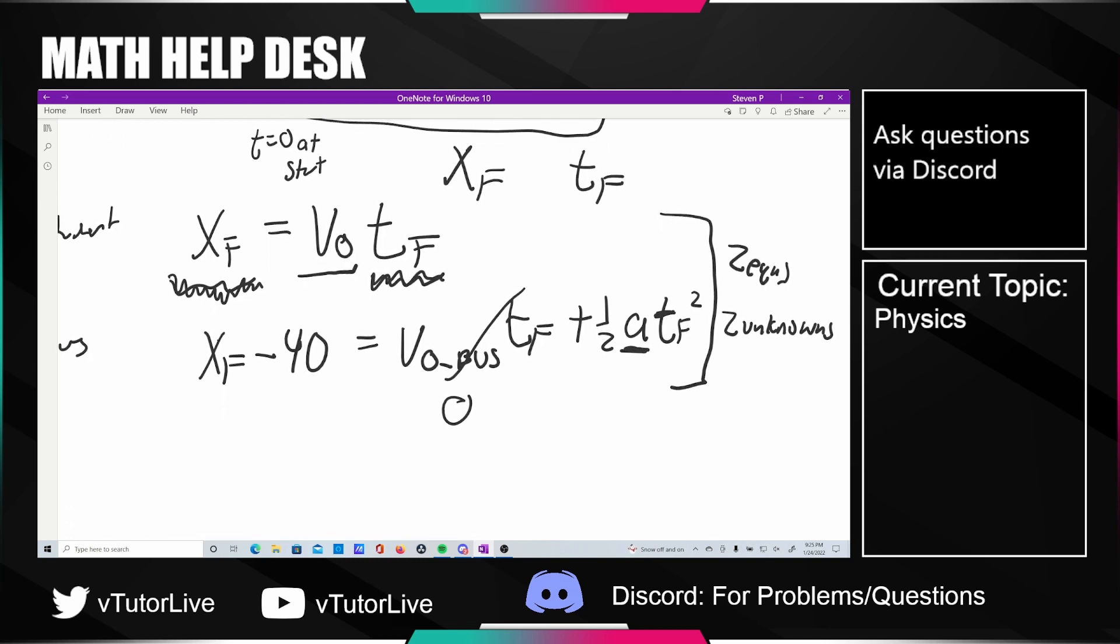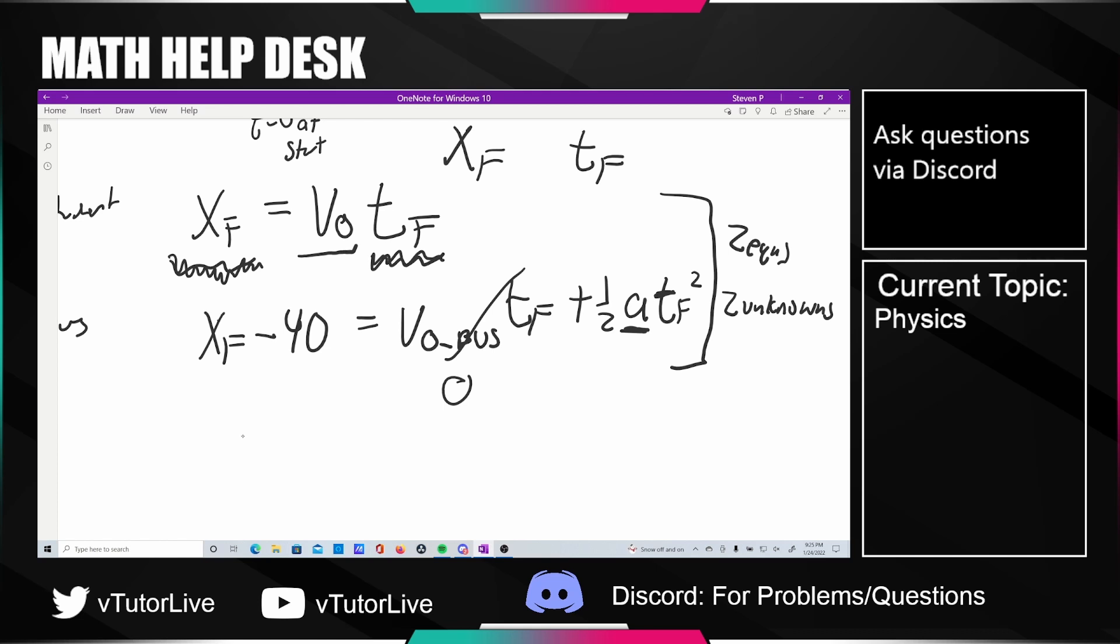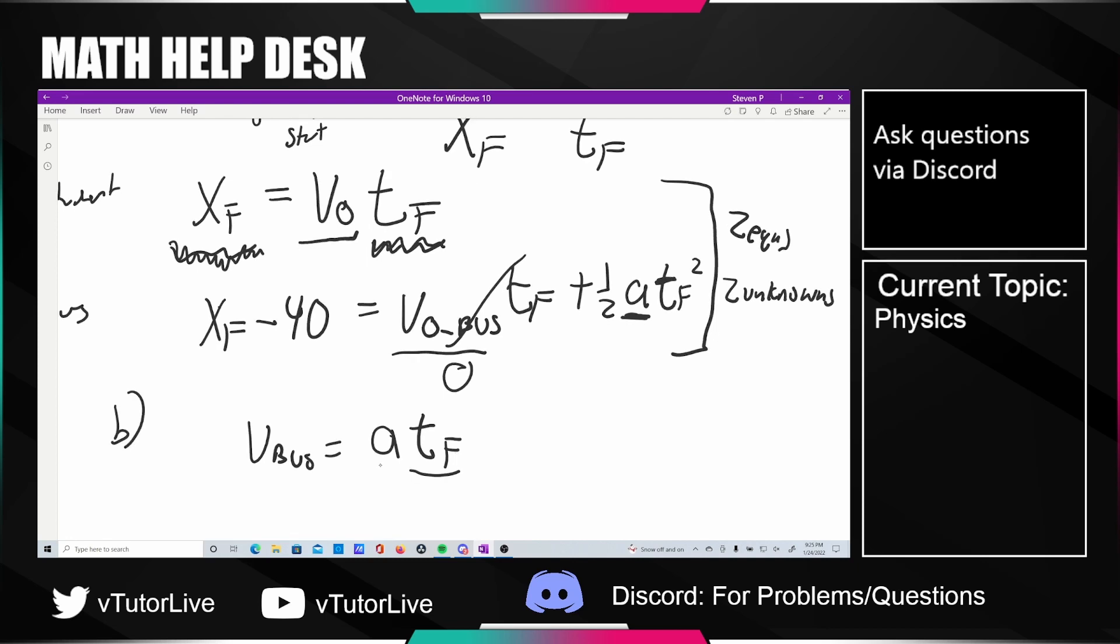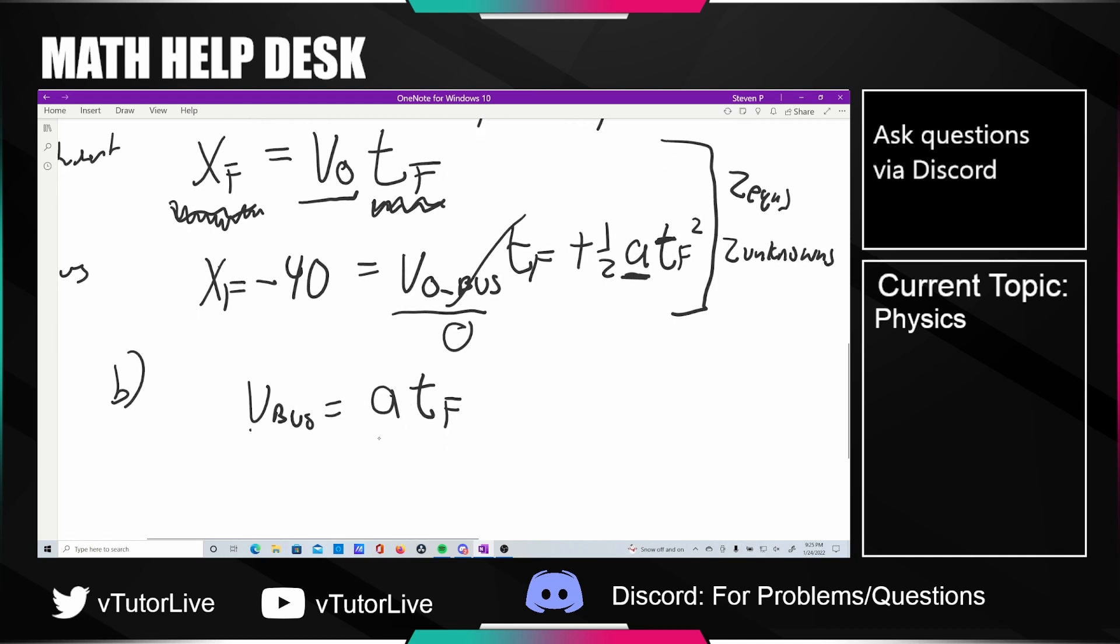Then if it's asking for how fast the bus is traveling, that shouldn't be so bad. V of the bus is equal to, remember the initial velocity is zero, so it's just all coming from the acceleration. That should just be acceleration of the bus times t_f. Once you have the time from the previous part, you just plug it in and multiply by a and you're done.